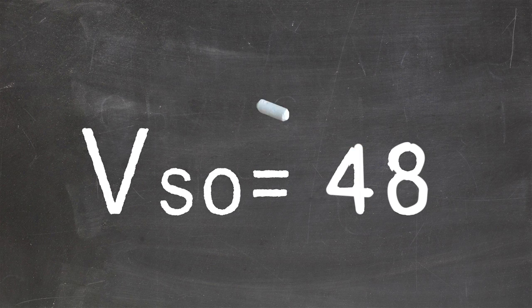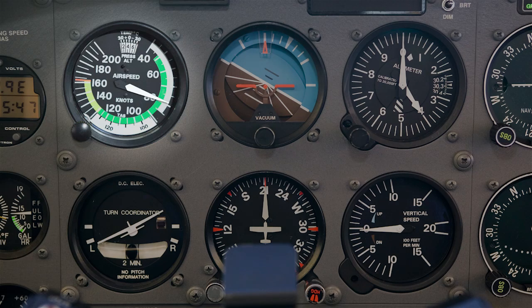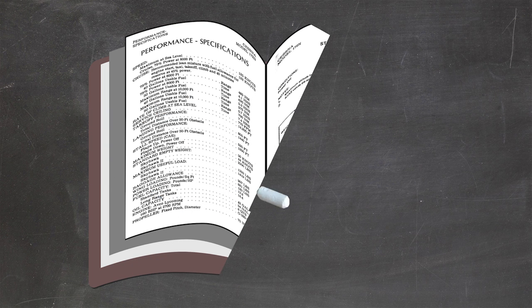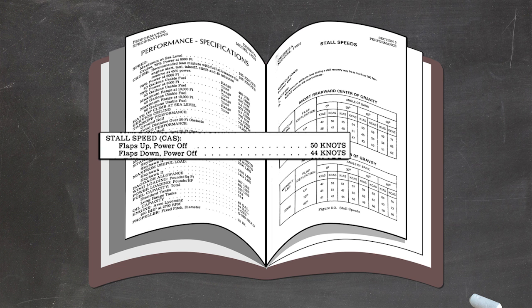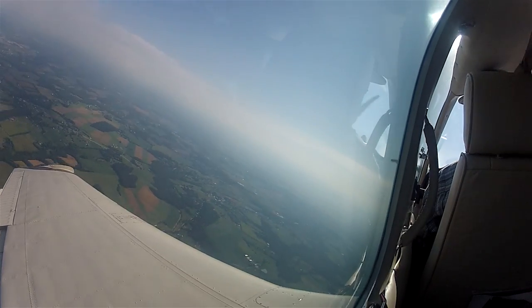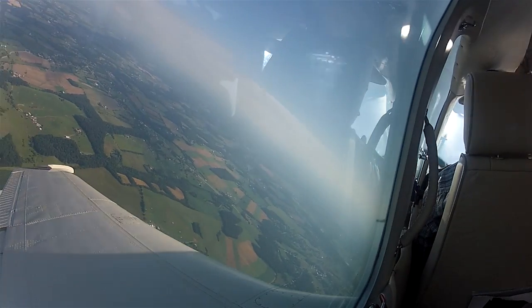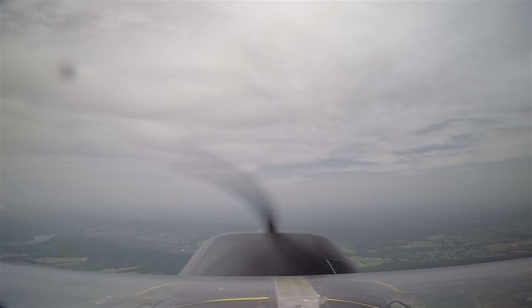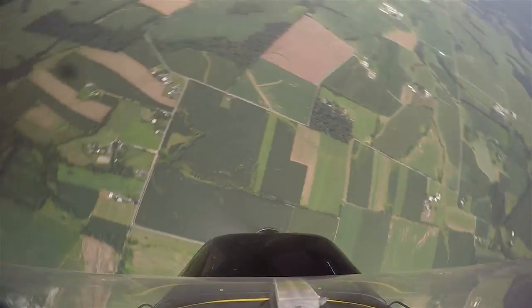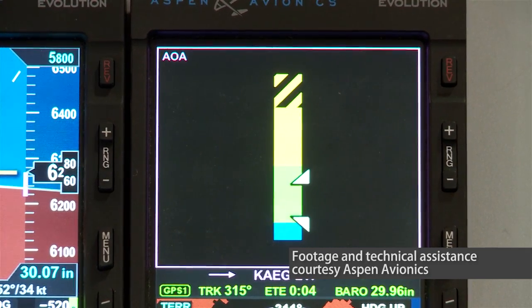An airplane can stall at any airspeed and any attitude. So why do we continue to use airspeed as a direct correlation to a wing stall? A warning horn might give us a clue, but by then it could be too late. What we need is a more precise tool for measuring lift. That tool is an AOA, or angle of attack indicator.